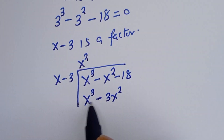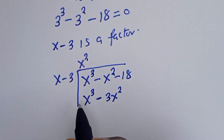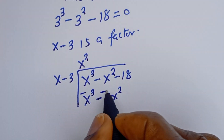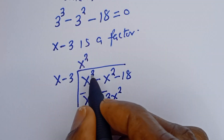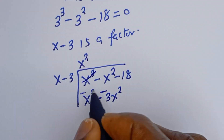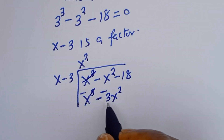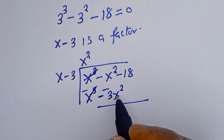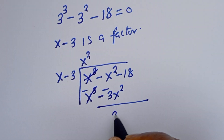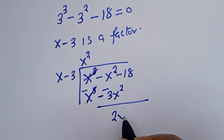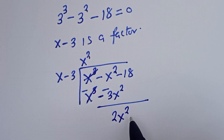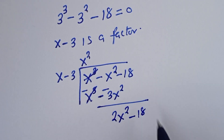Multiply by minus 1 to subtract: s cubed cancels. Then we have 3s squared minus s squared, which is 2s squared. Bring down the minus 18.